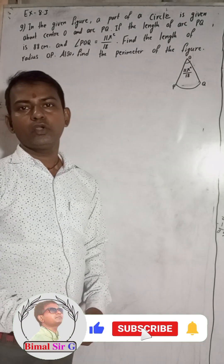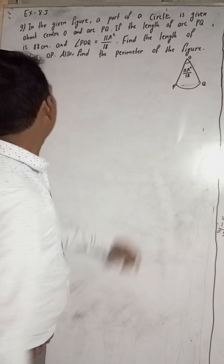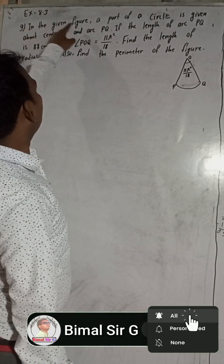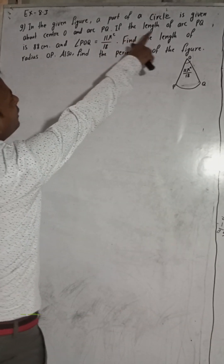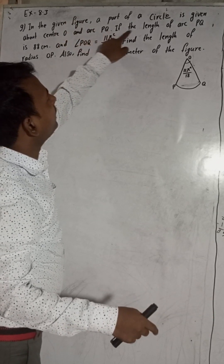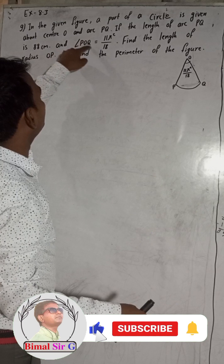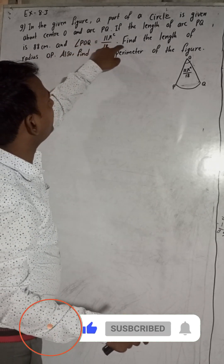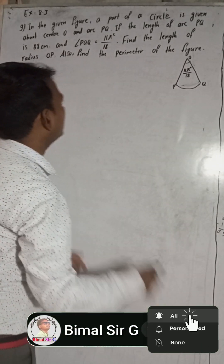Hi everybody, welcome back to Dimar Sharjee YouTube channel. Now I am going to solve exercise question number 9. In the given figure, a part of a circle is given about center O and arc RPQ. If the length of arc RPQ is 88 cm and angle POQ is equal to 11π/18 radians, find the length of radius OP and also find the perimeter of the figure.